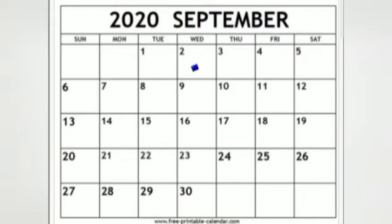What will be the day after tomorrow? That is Friday. Next question: what was the day before yesterday? Yesterday is 1st September, and the day before yesterday means it is Monday.